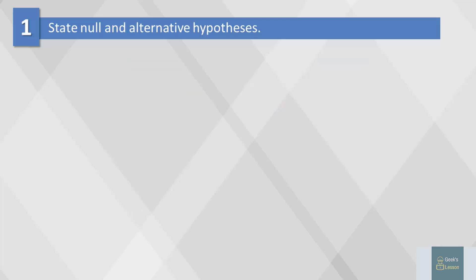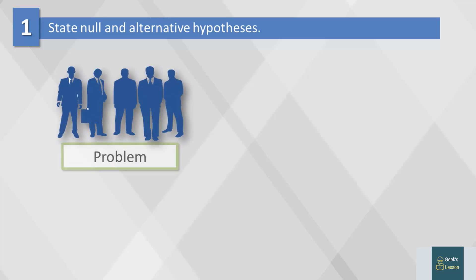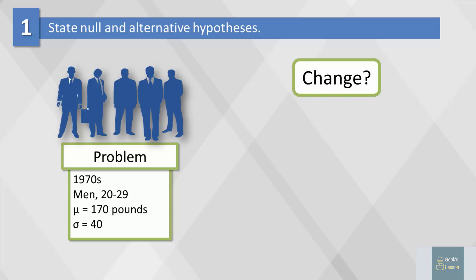Here is an example of setting up the null and alternative hypotheses. In the late 1970s, the weight of US men between 20 and 29 years of age had a log normal distribution with a mean of 170 pounds and a standard deviation of 40 pounds. To illustrate the hypothesis testing procedure, we ask if body weight in this group has changed since 1970. This is called our research question, and it can be answered in one of two ways.